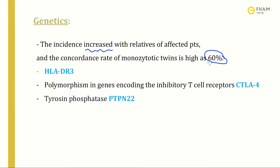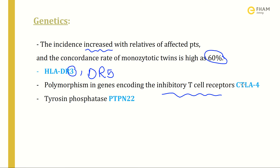The genetic defects associated with Graves' disease include HLA-DR3 (some references state DR3 and DR5), polymorphism in genes encoding inhibitory T-cell receptors CTLA-4, and tyrosine phosphatase PTPN22.